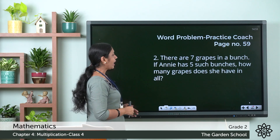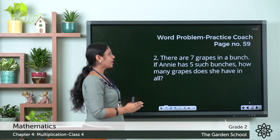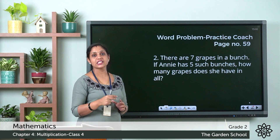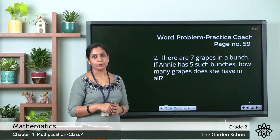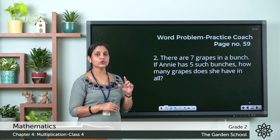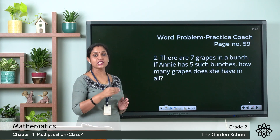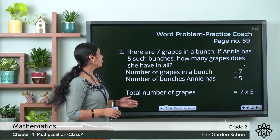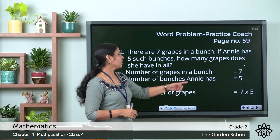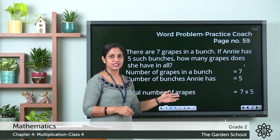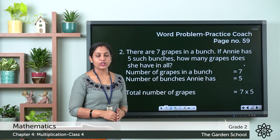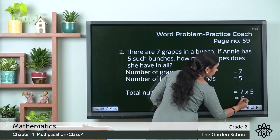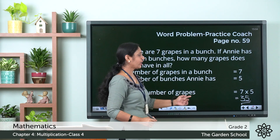Moving on to the next question: there are seven grapes in a bunch. If Annie has five such bunches, how many grapes does she have in all? Steps: number of grapes in a bunch = 7, number of bunches Annie has = 5. Total grapes = 7 × 5. Seven fives are 35, so the total number of grapes = 35.